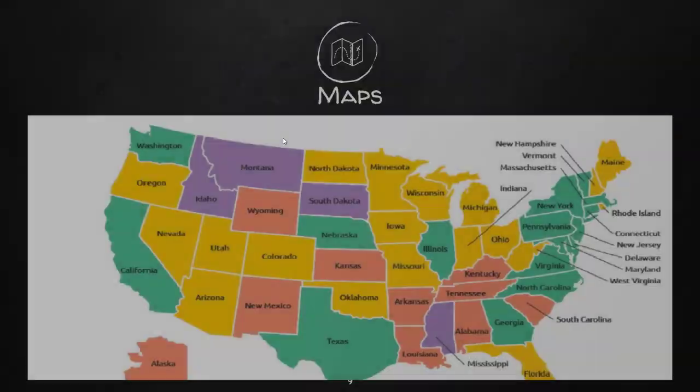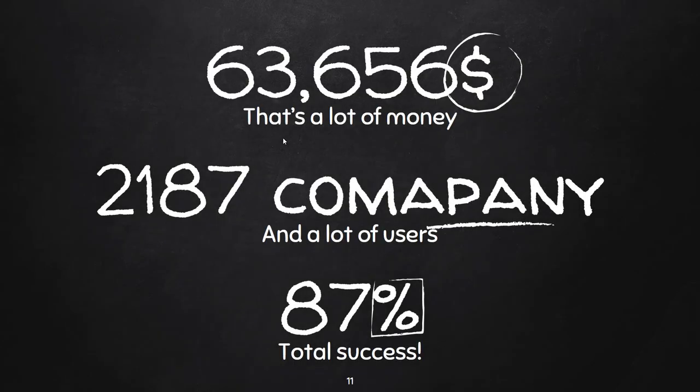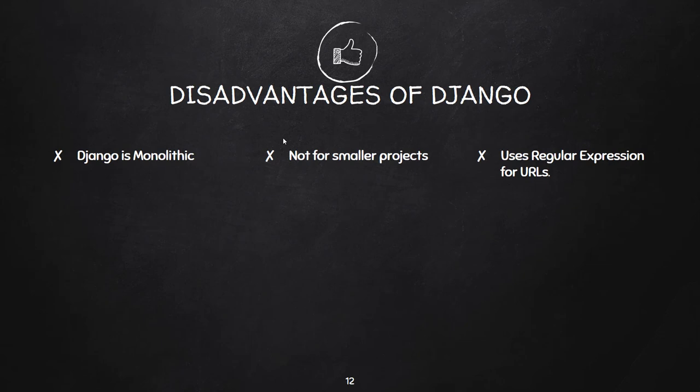The average salary of a Django developer is around $63,000. This is just an average — it can be higher or lower. So when you're considering becoming a Django developer, this is the salary to expect. There are also about 2,187 companies currently using Django, with lots and lots of users.